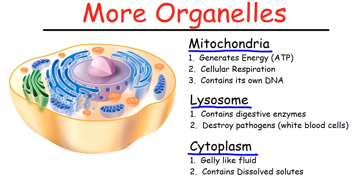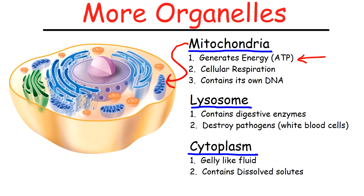Now let's talk about some other organelles. The next one is the mitochondria. The mitochondria has its own separate DNA, different from the DNA of the cell, and its job is to perform cellular respiration. In that process, it takes the energy stored in fats and carbohydrates and converts it to a molecule known as ATP, adenosine triphosphate.